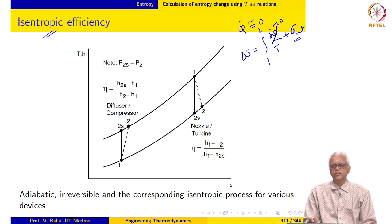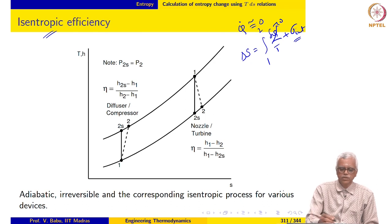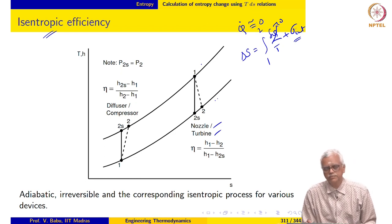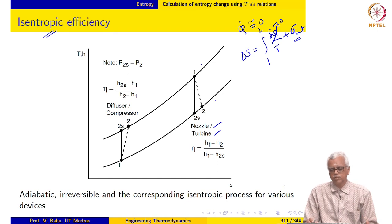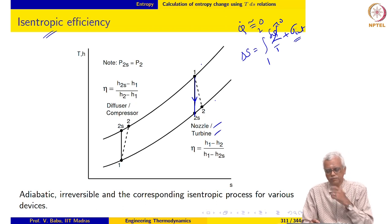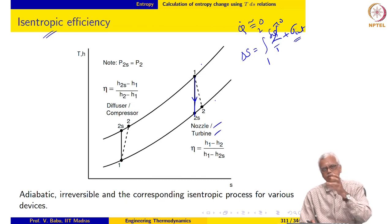An isentropic process in such a device represents the best possible process, with the actual process being worse due to internal irreversibilities. For example, if you look at a nozzle or a turbine, both of which expand the fluid from high pressure P1 to low pressure P2, if the expansion process follows an isentropic path, then the conversion of enthalpy to kinetic energy in the case of the nozzle will be the maximum possible.